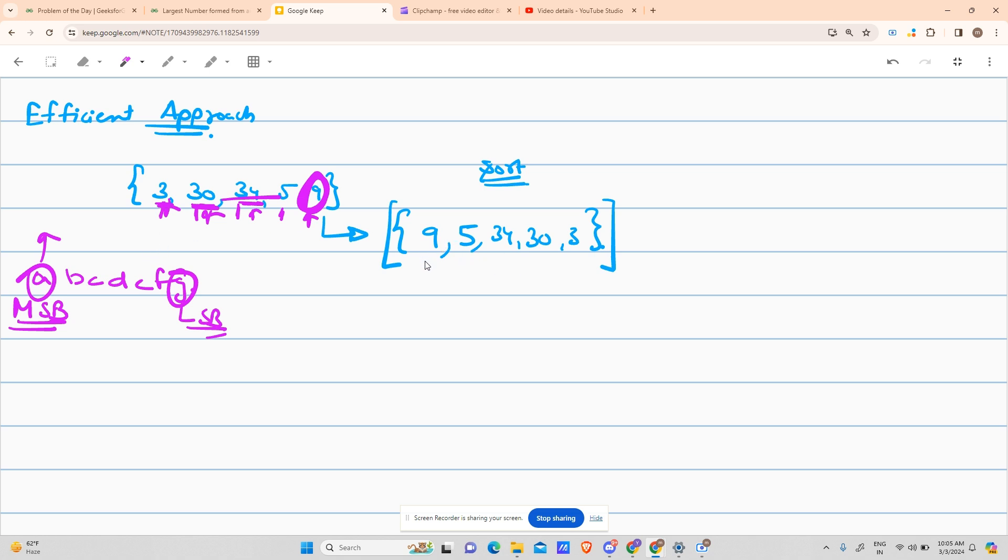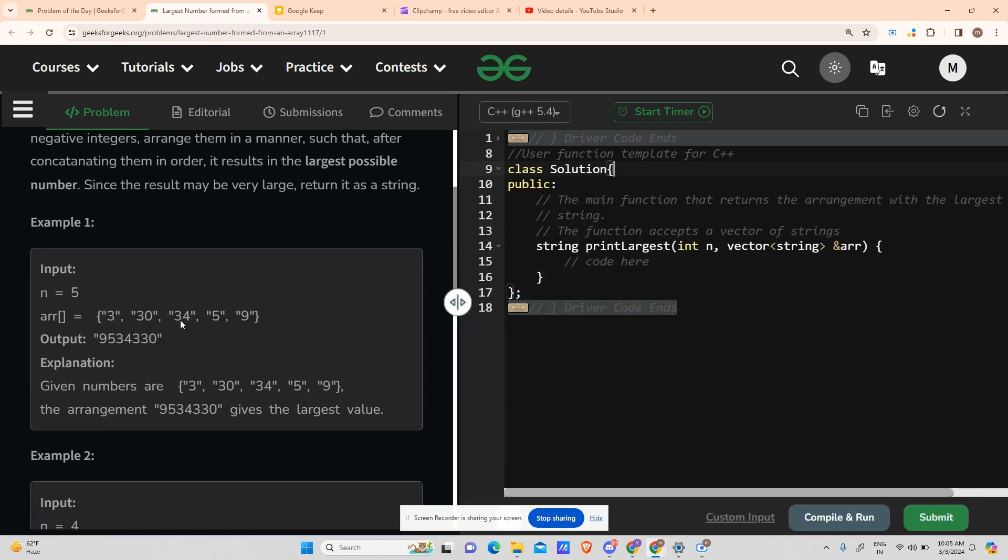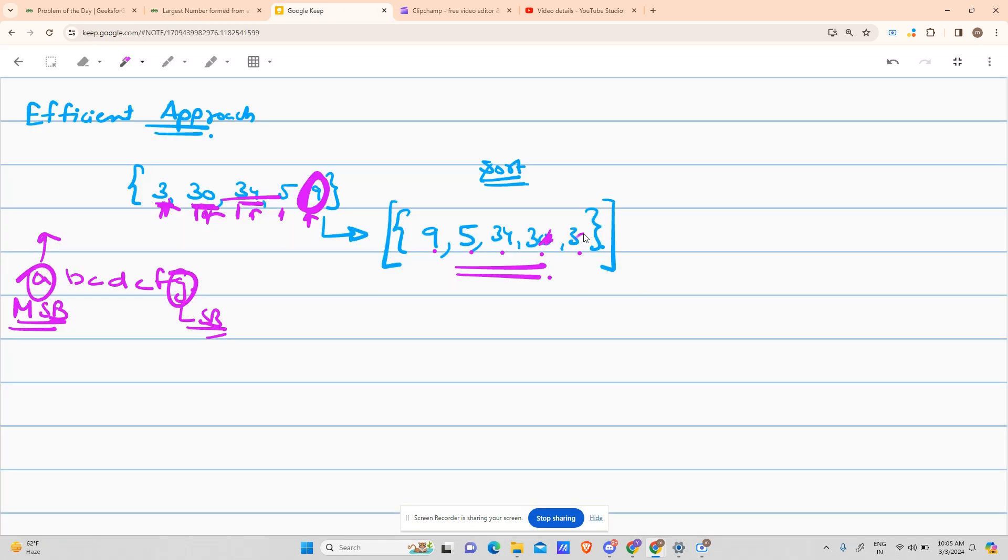So what I will do is sort it: 9, 5, 34, 3, 30. The same approach applies. If I sort it in the conventional way, the answer will not come right. So I have to implement my own compare function to sort.